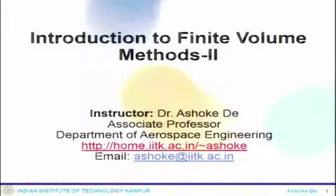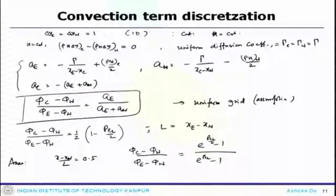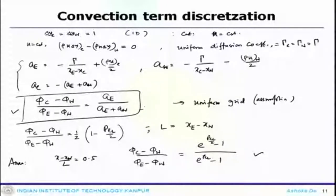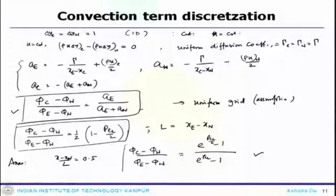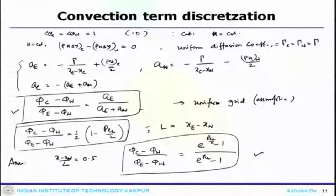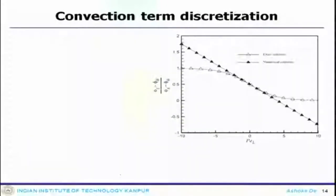Welcome to the lecture on the Finite Volume Method. These two solutions — one is the discretized solution and one is the analytical solution. The analytical solution provides the exact one, and the discretized solution gives the numerical solution. One can see, for the variable Peclet number, the analytical solution is also a function of Peclet number.